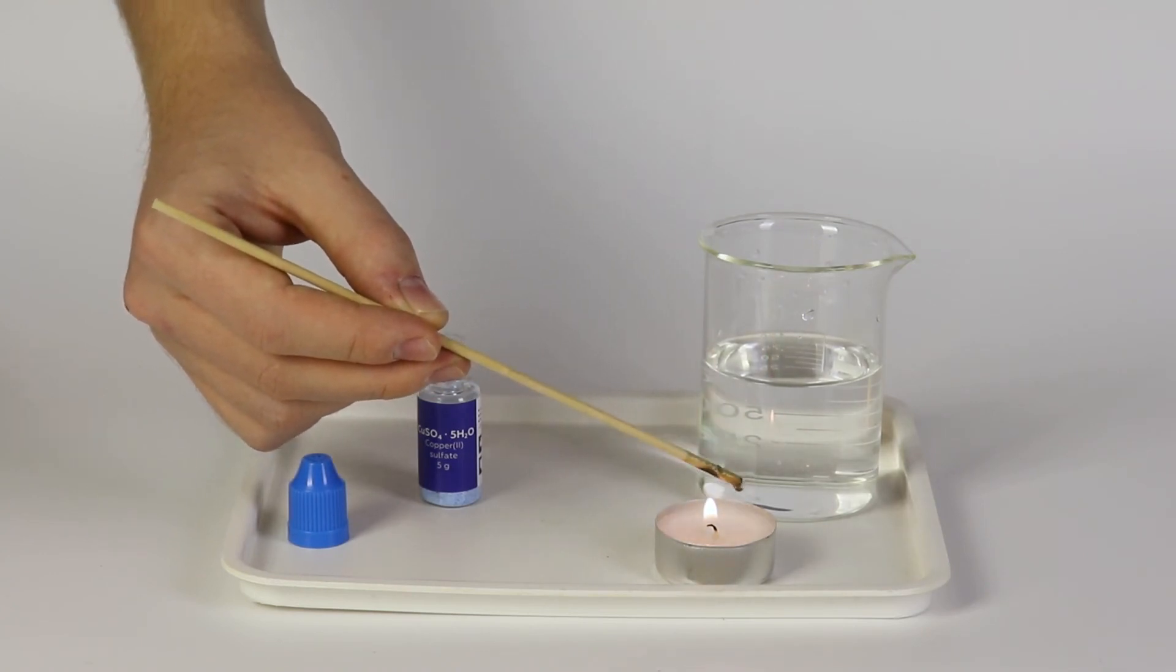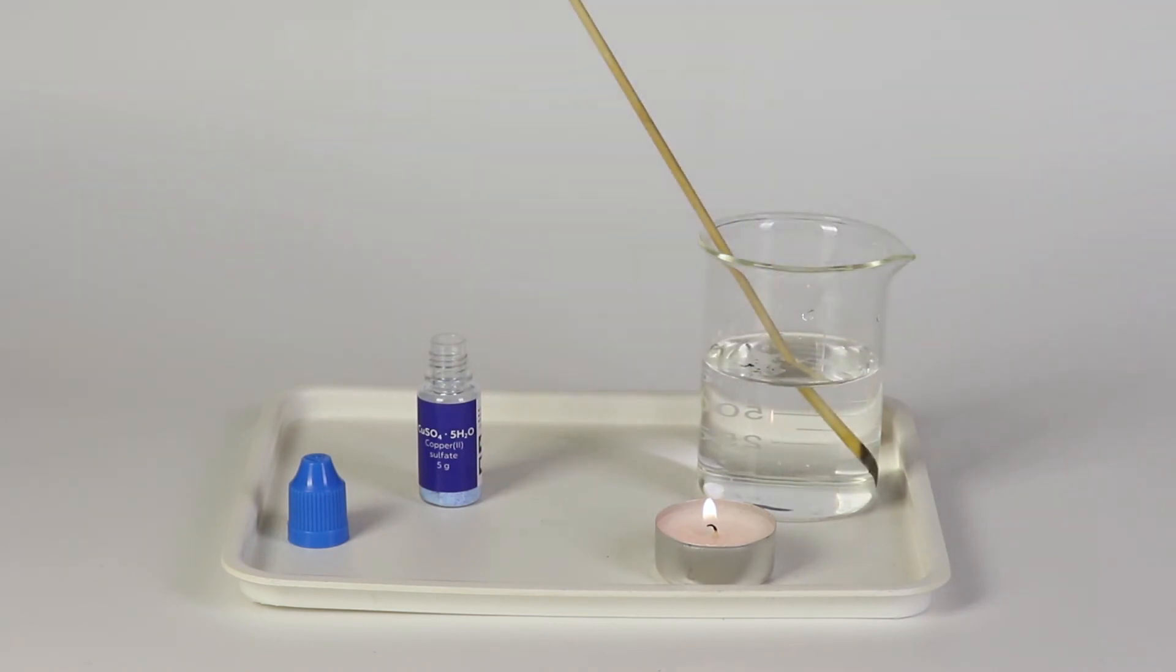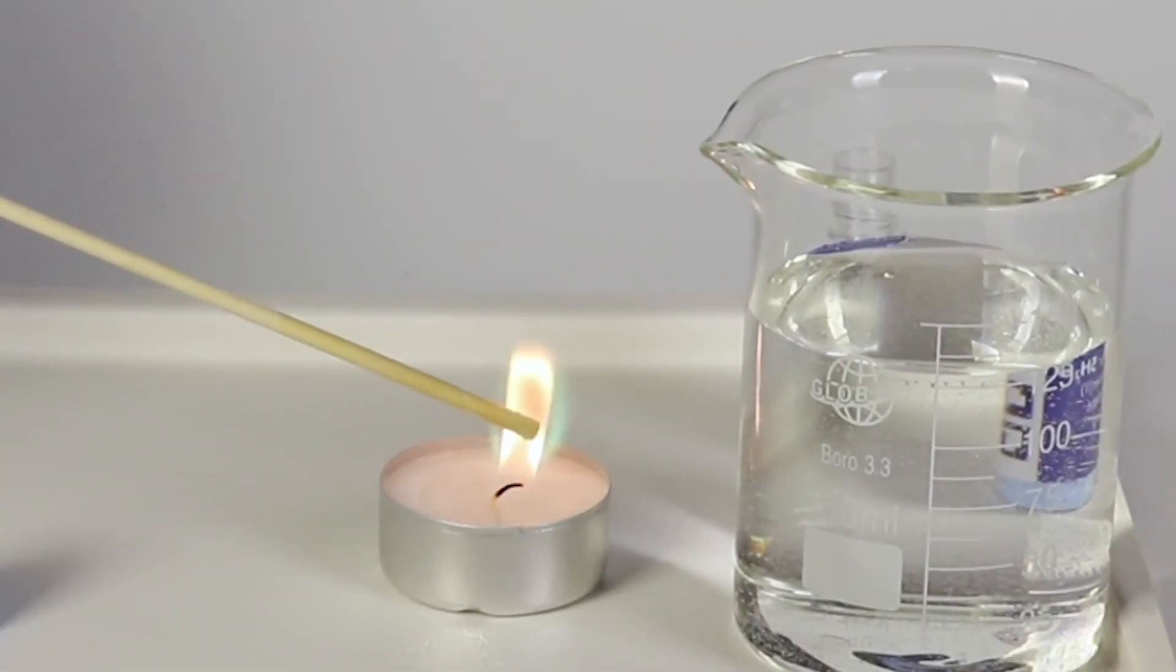When heated, copper ions, which are present in copper sulfate, go into a very unstable state for a split second and then return into their initial state. This transformation causes the emission of the green sparkles, which we observe in the experiment.